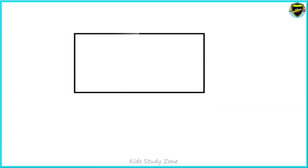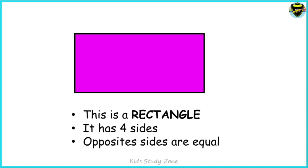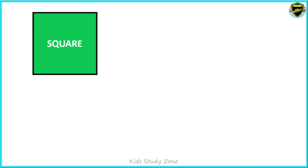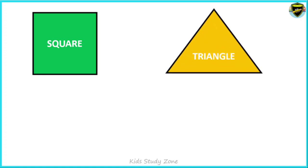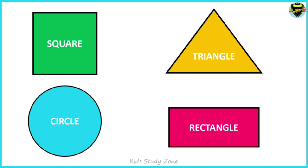Now let us see the next shape. This is a rectangle. It has four sides; opposite sides are equal. Children, remember — the square and rectangle both have four sides, but in a square all four sides are equal, whereas in a rectangle the opposite sides are equal. Now let us revise once again: square, triangle, circle, rectangle — these are the four shapes we learned today.